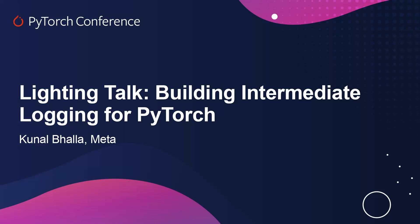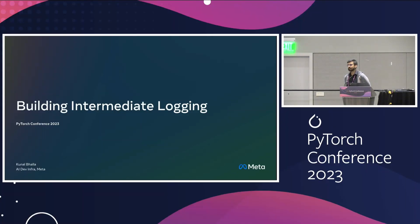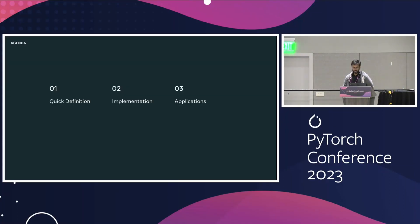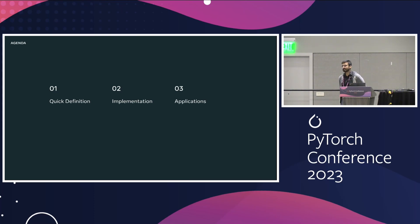I'm Kunal. I'm a software engineer at Meta. I've been working there for around 12 years at this point, and for the last four, I've been working on tools for ML engineers. I'll be talking about building intermediate logging. I'll cover what I mean by intermediate logging, speed run through the tricky bits of implementation, and at the end talk about some of the applications I've seen people apply it to.